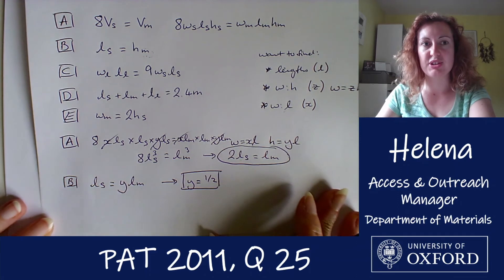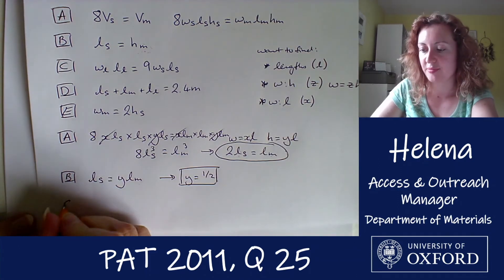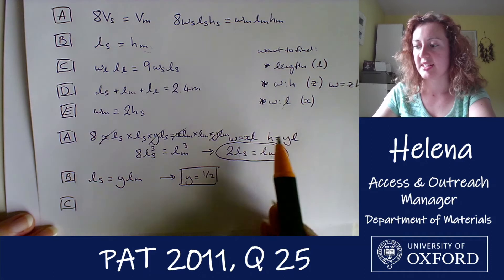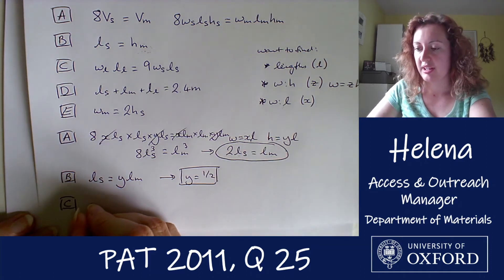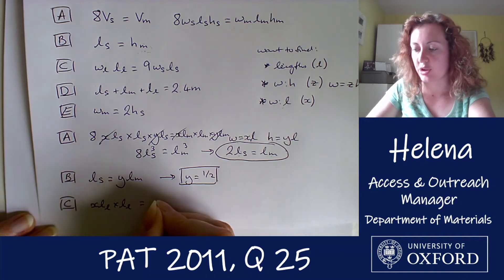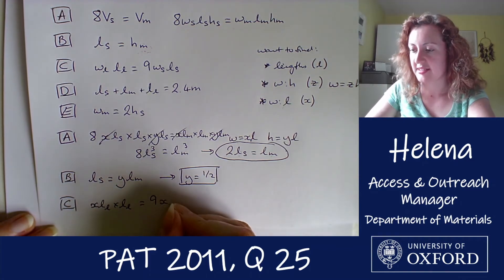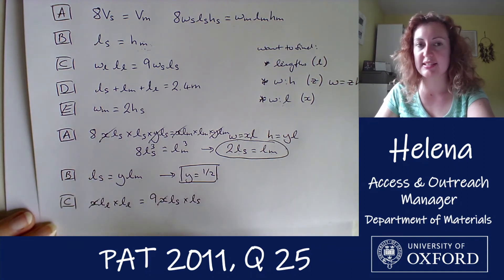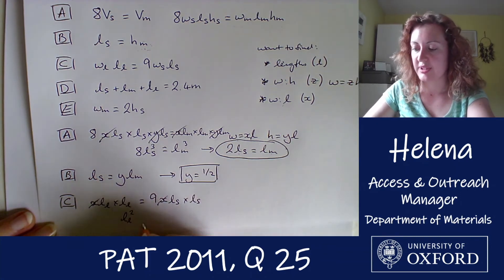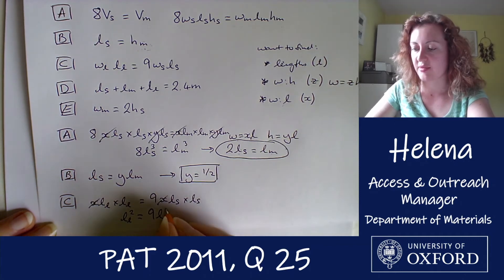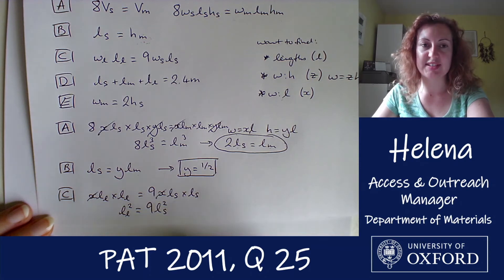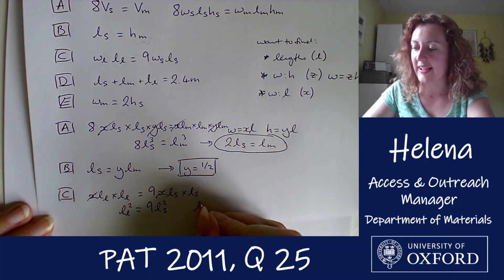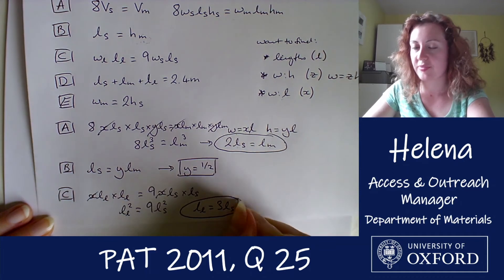Moving to equation C. Writing everything in terms of lengths: x·ll times ll equals 9 times x·ls times ls. The x's cancel, giving ll² equals 9·ls². Taking the positive square root — a negative length doesn't make sense — we get that the length of the large equals 3 times the length of the small. So ll equals 3·ls.